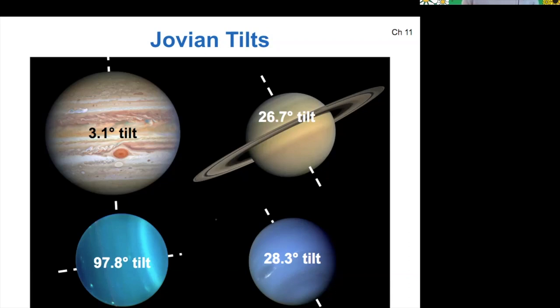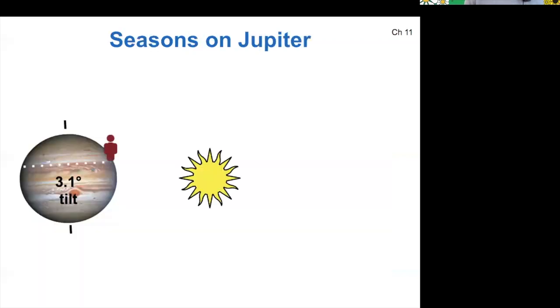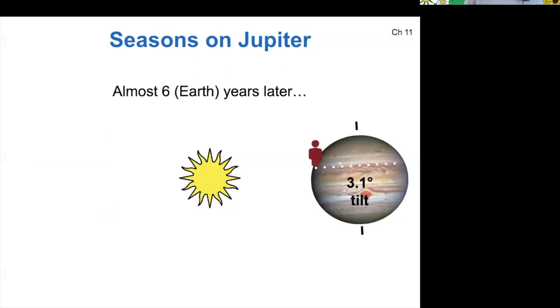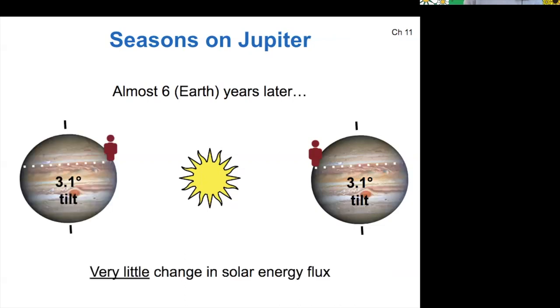So what does that mean about the seasons that these different worlds would experience? Well, on Jupiter, it has a 3.1 degree tilt. So if we put an observer at some northern latitude and then allowed that observer to go to the other side of Jupiter's orbit about six or three years later, what would we find? They experienced very little change in solar flux because of that small tilt. So the seasons on Jupiter would not be very extreme.